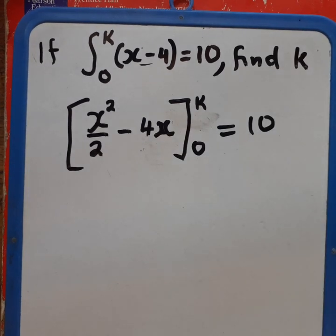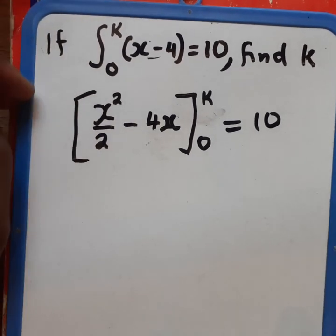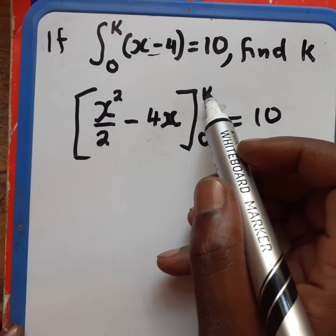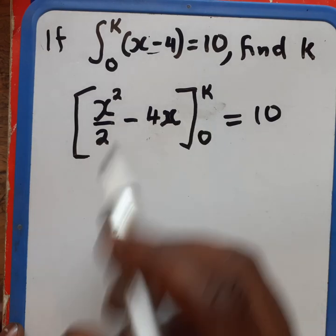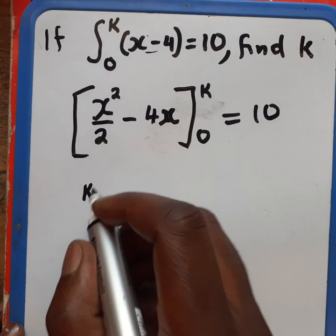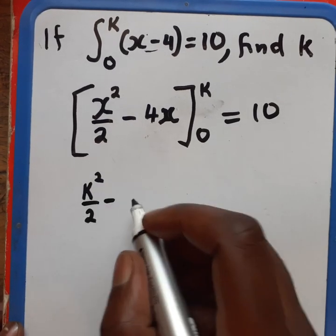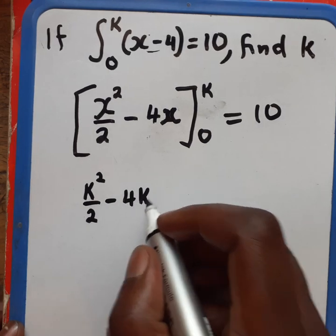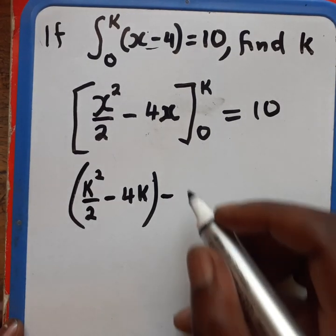So as per our tradition, we need to start with the upper limit. Where there is an x, we need to put the k. We need to put the k here. So it's going to be k squared over 2 minus 4k minus. Now we use the 0.